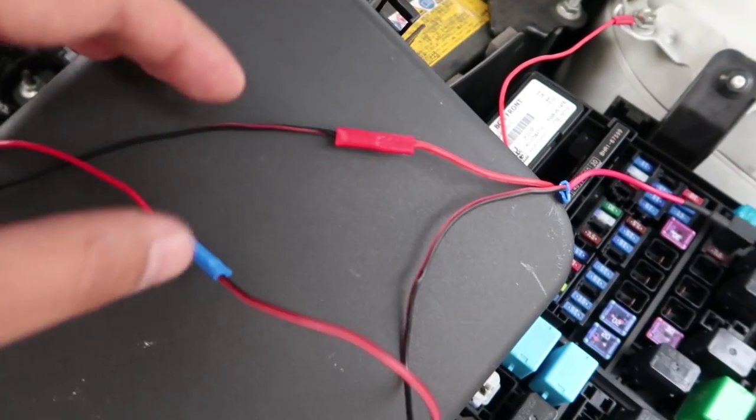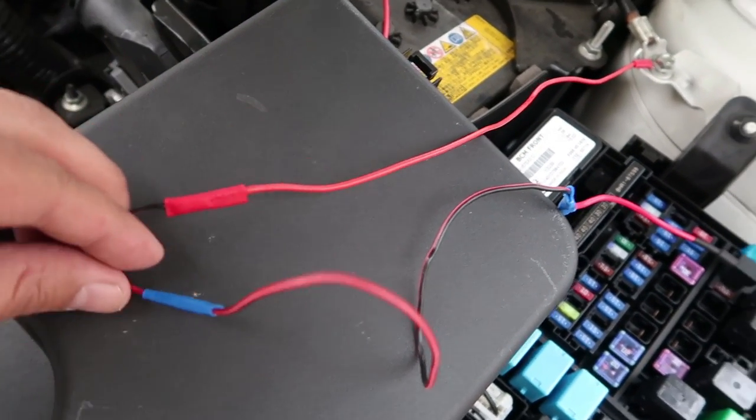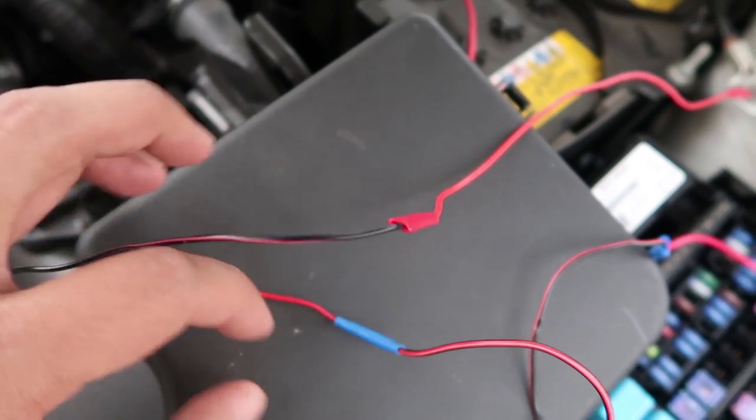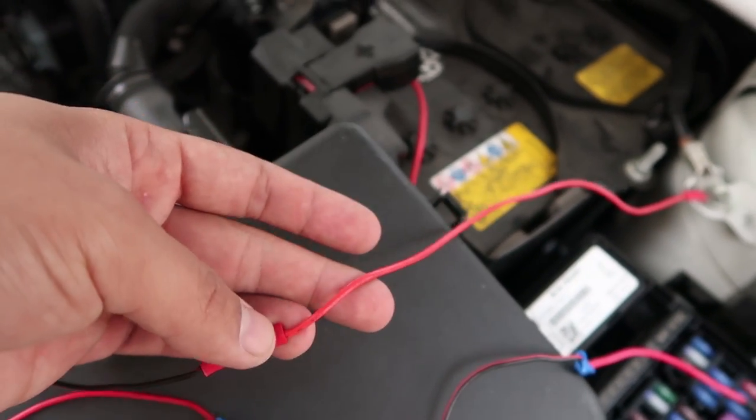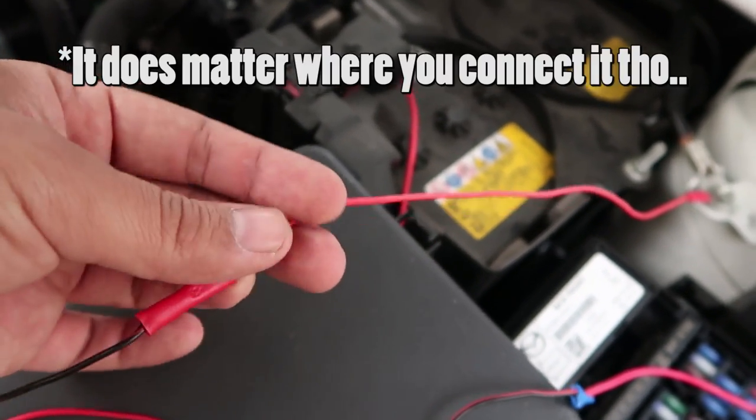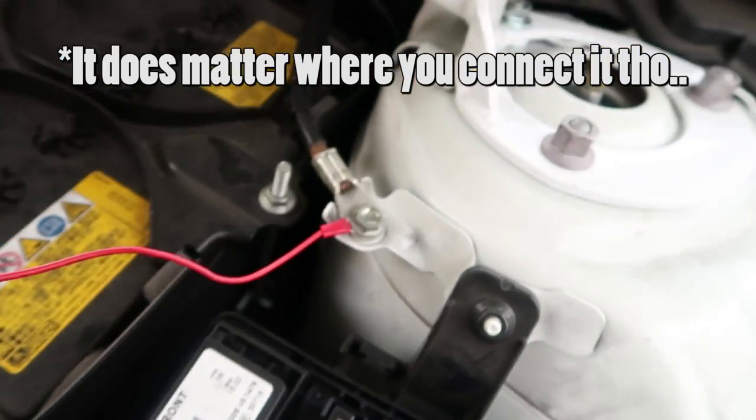So here's kind of an example of what it looks like on the car. Here's my negative terminal. Here's the positive terminal. I connected apparently the wrong color wire but it doesn't matter. So I connected this one to the negative terminal over here right there.